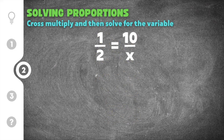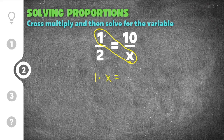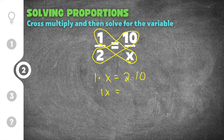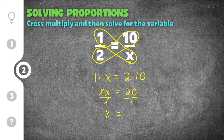Moving on to our second practice problem. This problem gives us 1 half is equal to 10 over x. The first thing we have to do is cross multiply. I'm going to do the numerator of the first fraction times the denominator of the second: 1 times x. That equals the denominator of the first times the numerator of the second: 2 times 10. Simplifying: 1x equals 20. Since 1 times x is just x, the solution to this proportion is x equals 20.